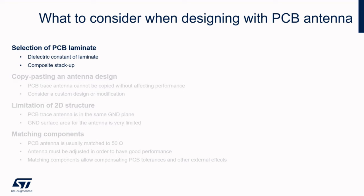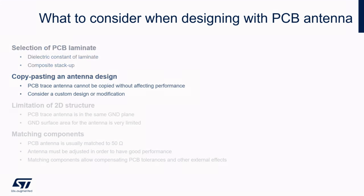Here are several basic aspects we need to consider. The permittivity, or dielectric constant, of the laminate is a critical design parameter for PCB trace antennas. Variation can cause severe detuning of narrowband antennas, especially if a stack-up of various layers is used. At frequencies in GHz bands, a low-loss laminate should be considered. Unlike chip antennas, PCB trace antennas cannot be copied to another device expecting good performance. If implementing a PCB antenna, you should always consider a custom design or at least adjustment for your conditions.